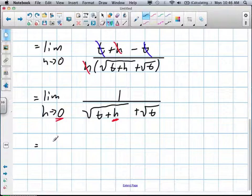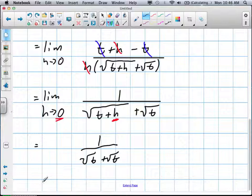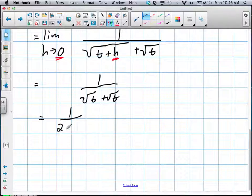Which means our limit is now going to be 1 over √t - and because that 0, t+h is just t - plus √t. And what's √t + √t? You can just write it as 2√t.